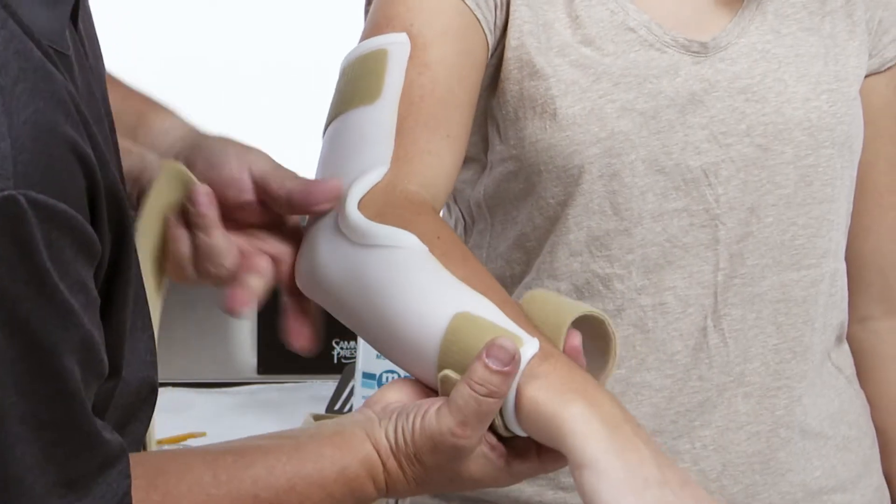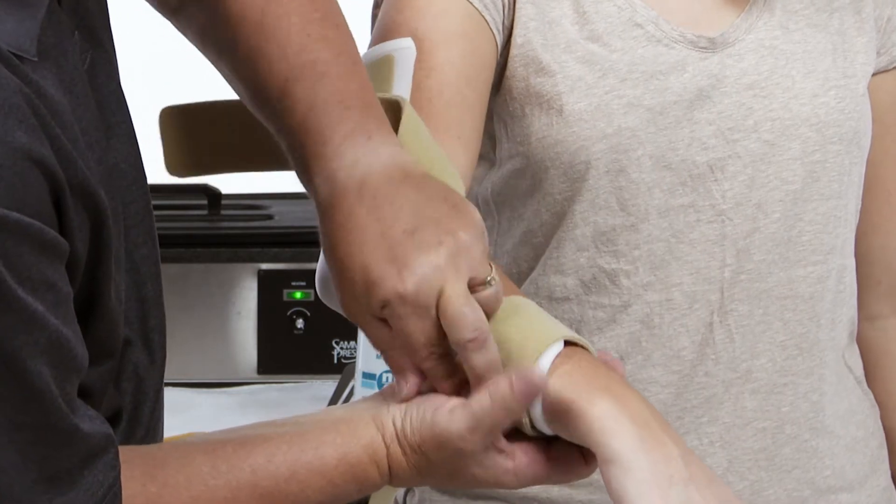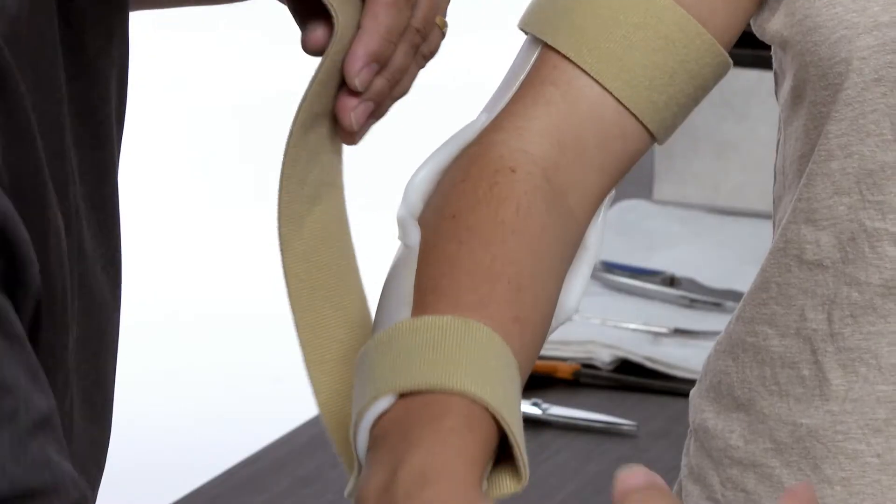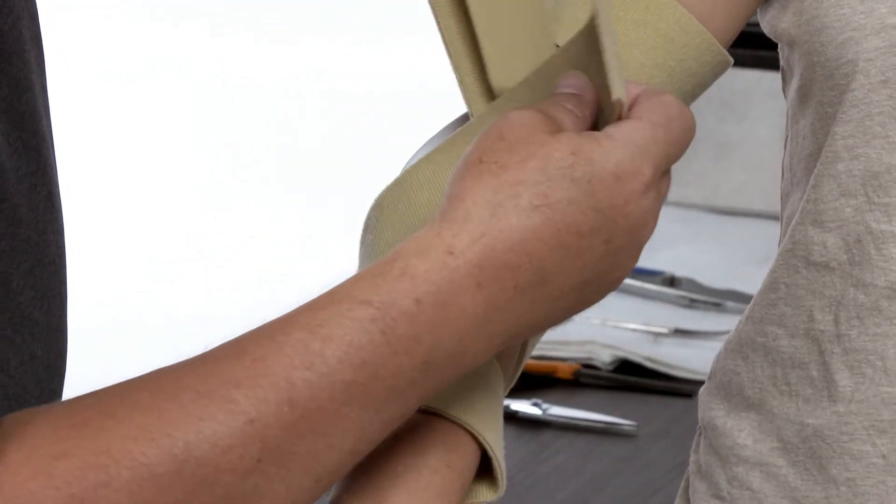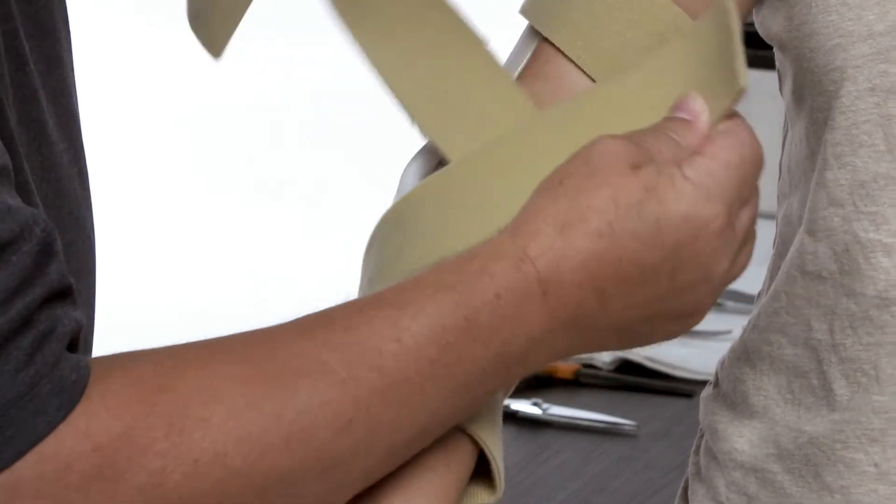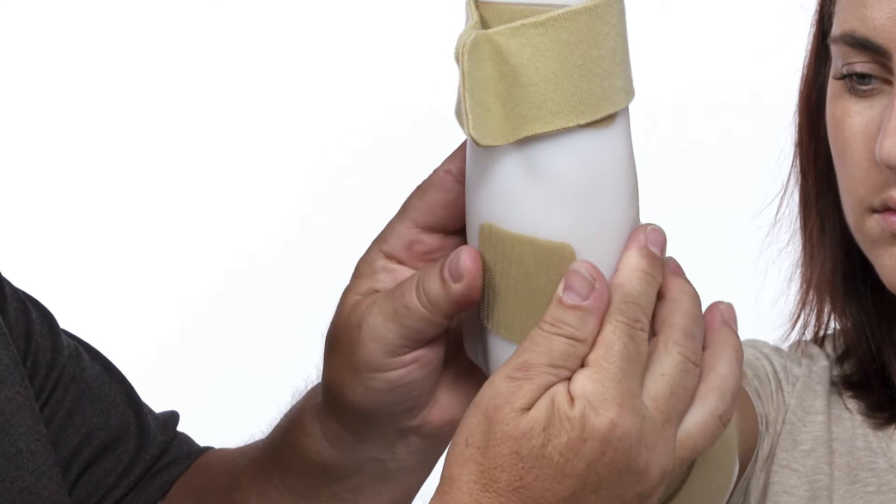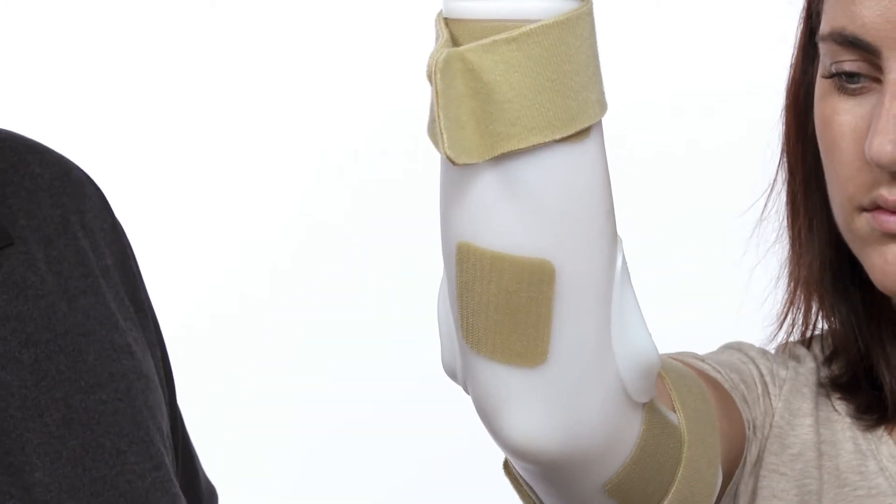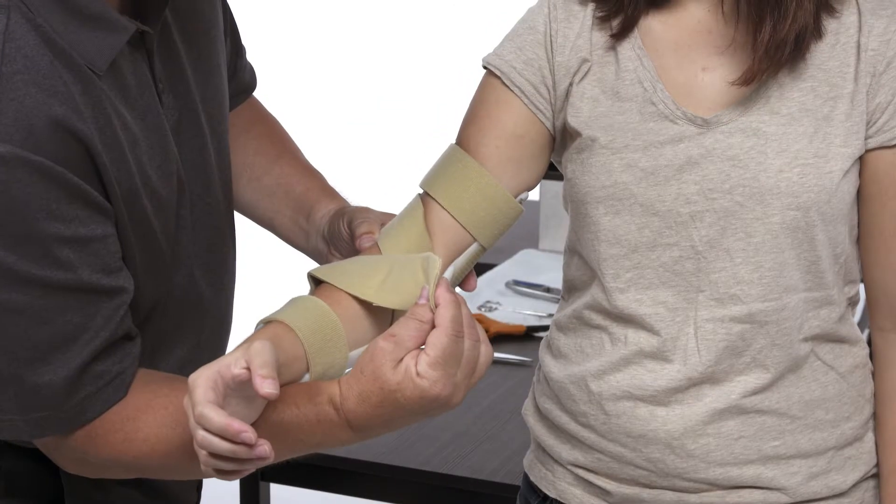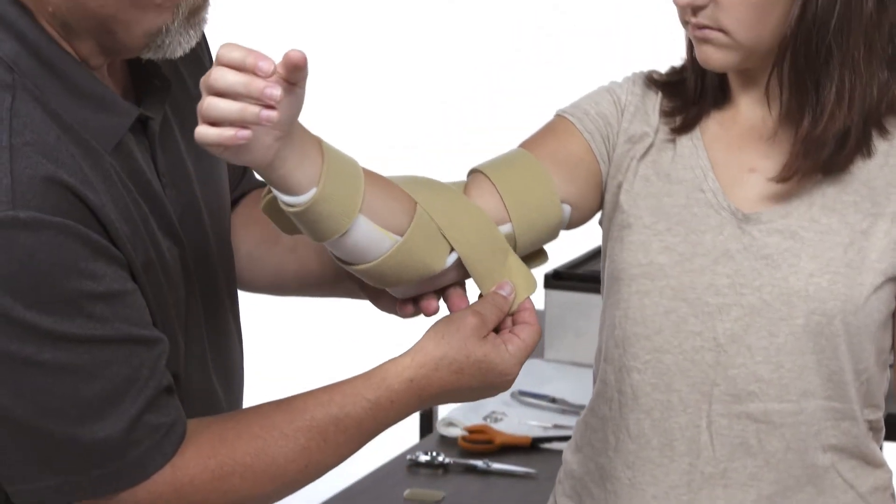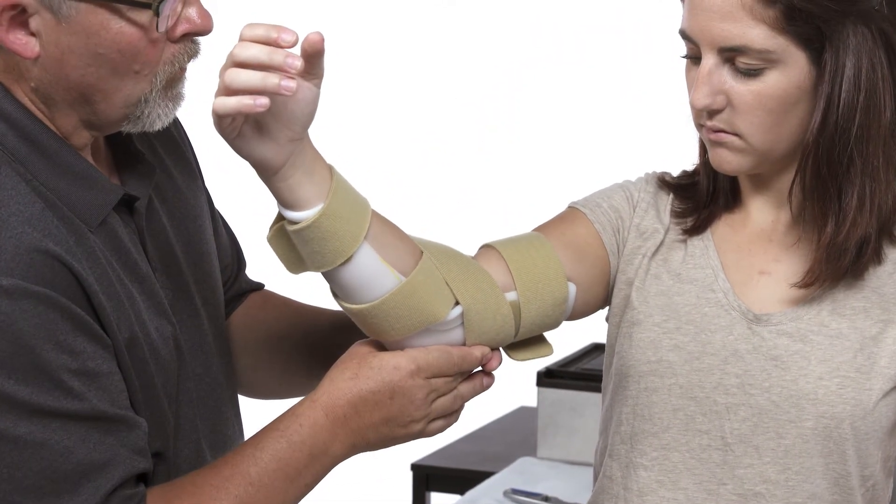Place three straps on the splint. One distal, one proximal and a crossing strap over the elbow. Shimmy the strap up the splint and arm until it organically fits in place. Then apply the third velcro hook where the cross strap sits under the splint. Fit the cross strap in place and check that the straps aren't impinging the patient's arm.